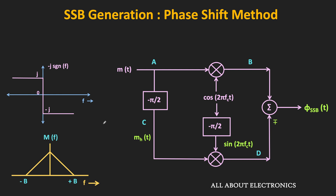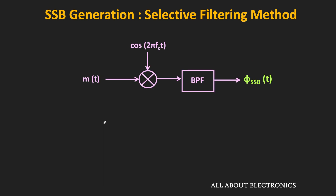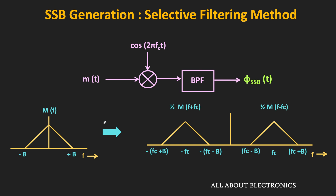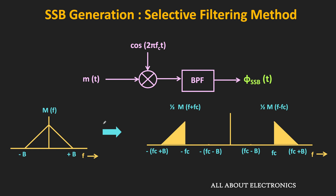Now let us see the other method, which is most widely used for SSB generation: the selective filtering method. In this method, first the DSBSC signal is generated using a balanced modulator, and then by passing this DSBSC signal through a bandpass filter, it is possible to remove one of the sidebands. When the message signal is multiplied with cos(2πfct), the entire spectrum shifts by ±fc. Passing this through a bandpass filter with a sharp cutoff at fc, we can suppress either the upper or lower sideband.